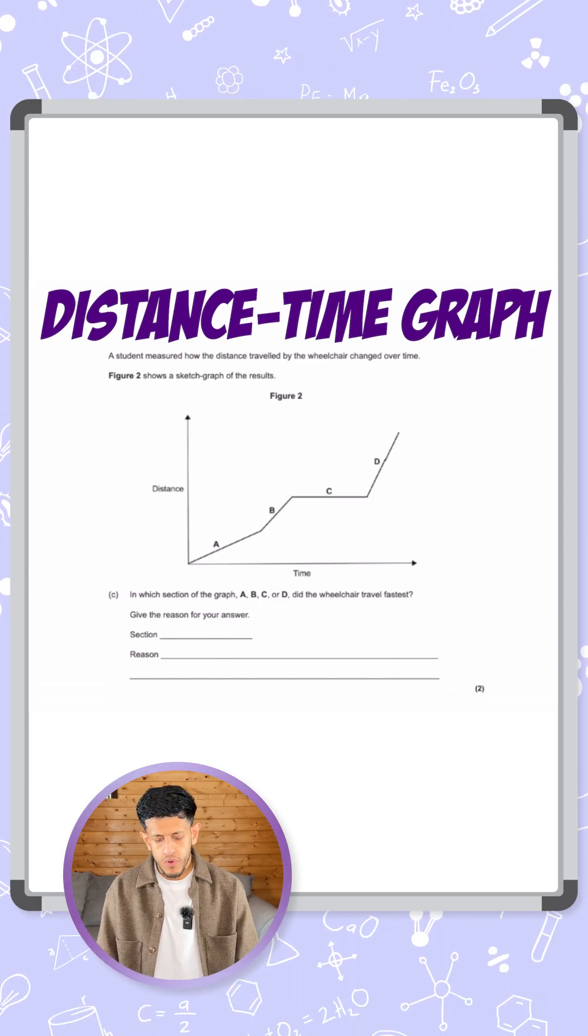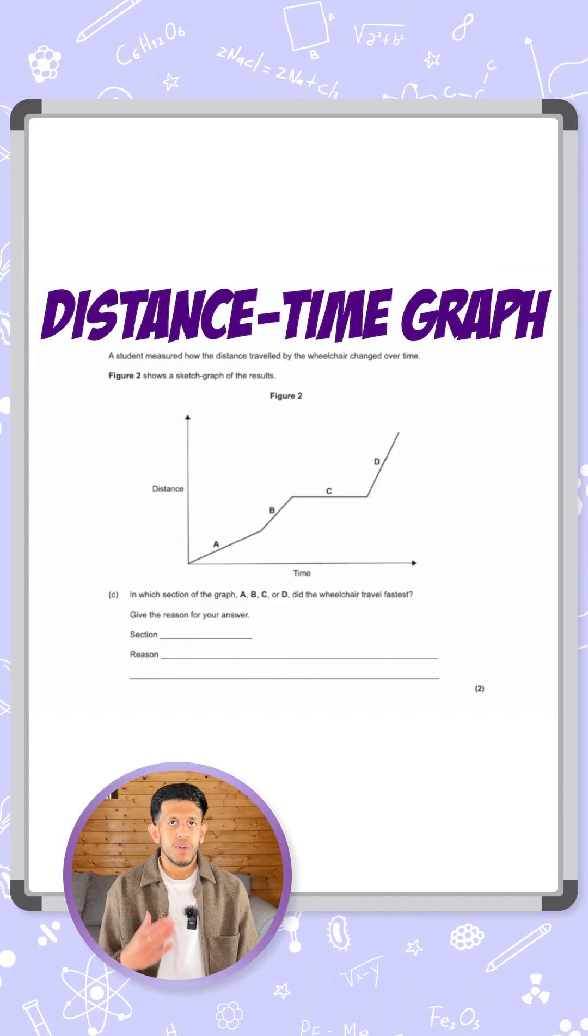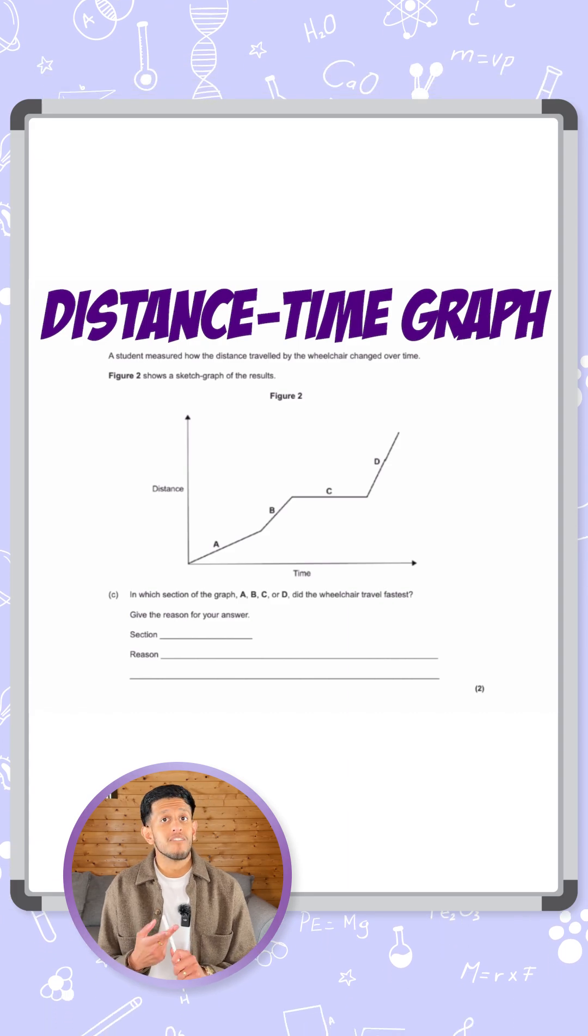In which of the sections of the graph A, B, C or D did the wheelchair travel the fastest and give a reason for your answer. So one for selecting the right section and one for your reasoning.